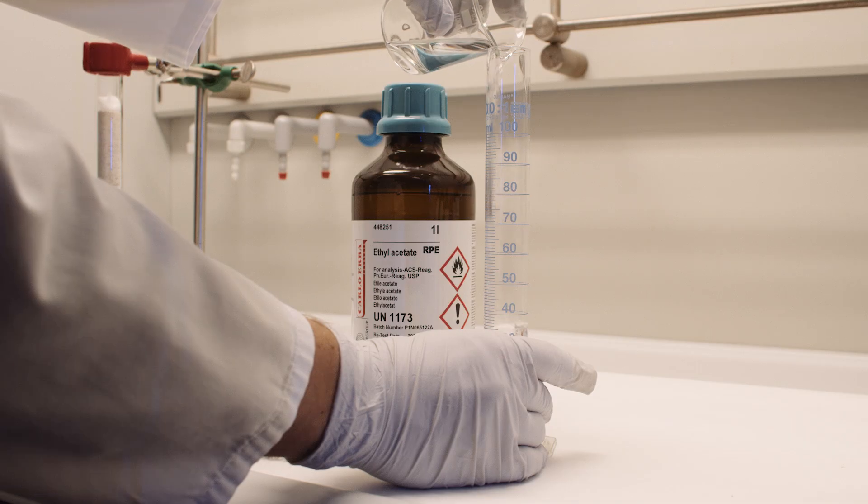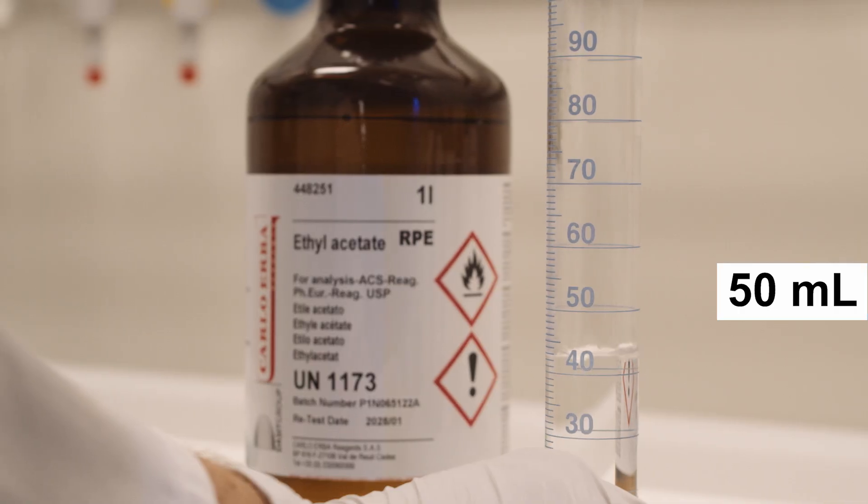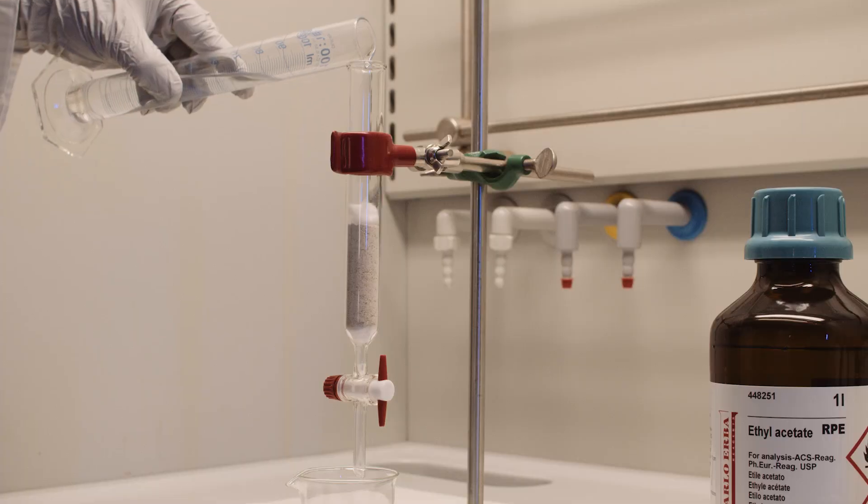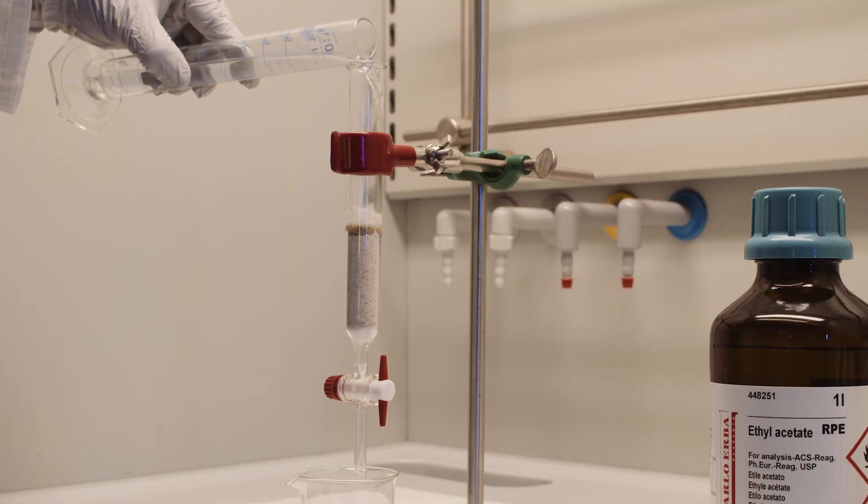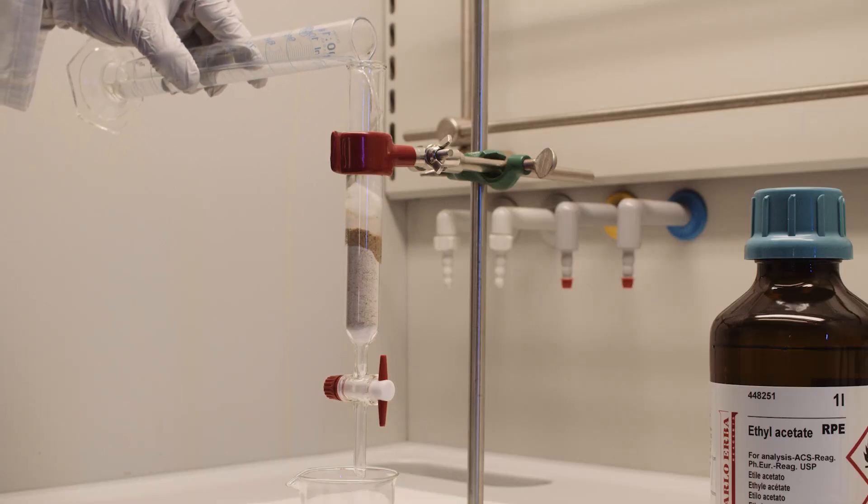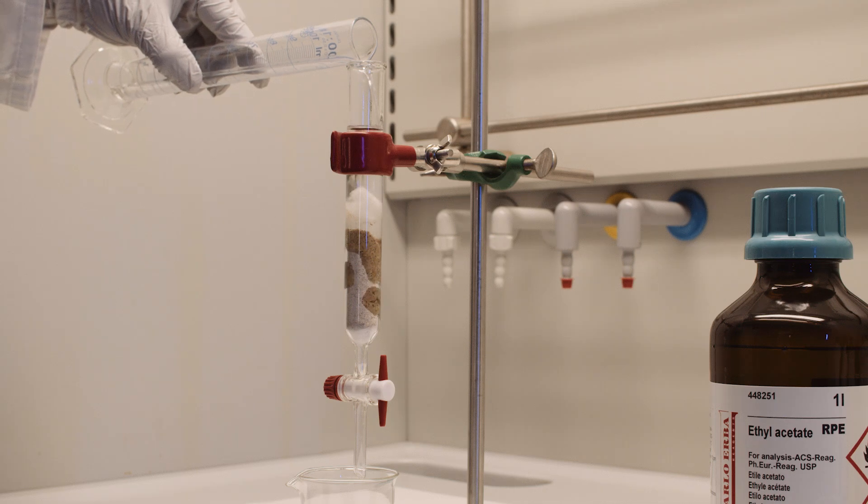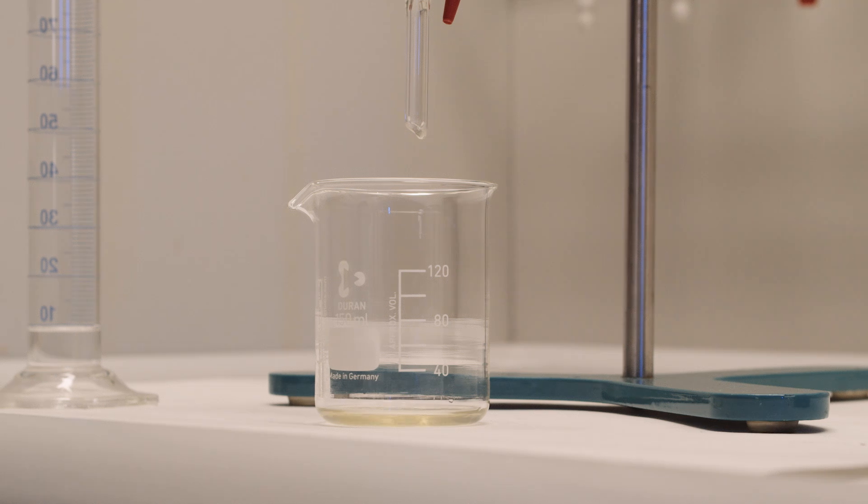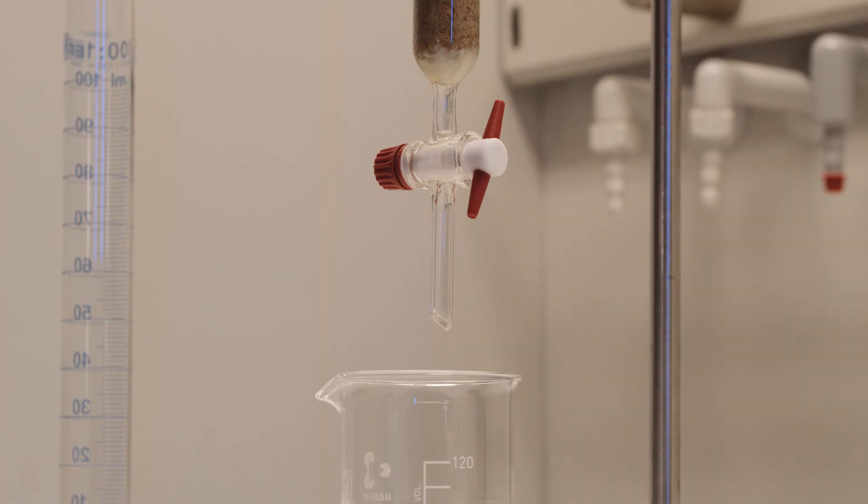In a fume hood, measure 50 ml of the mobile phase, which in our case is ethyl acetate. Begin to pour the mobile phase into the column. Here it is important that the valve of the column is fully open and allows air to escape. When the mobile phase begins to drip out of the column, close the valve if necessary to achieve a flow rate of about one drop per second.